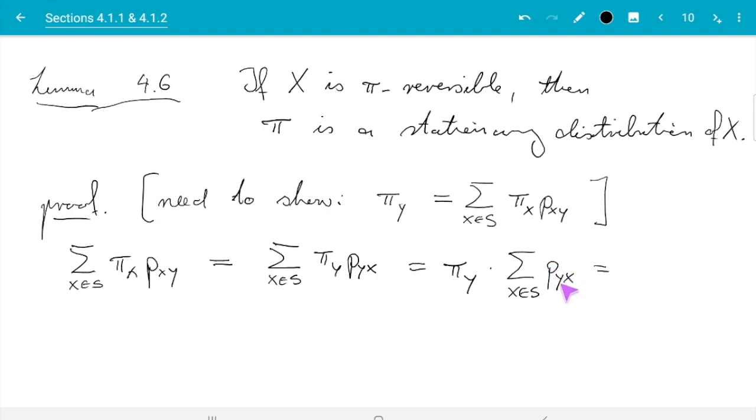So the elements added over rows add up to one. Y is fixed. That's the row index. And x goes over all columns. So that here is the sum along row y. So that is pi_y times one, which equals pi_y. And if you check up here, this is what we are meant to show. So this proof is complete.